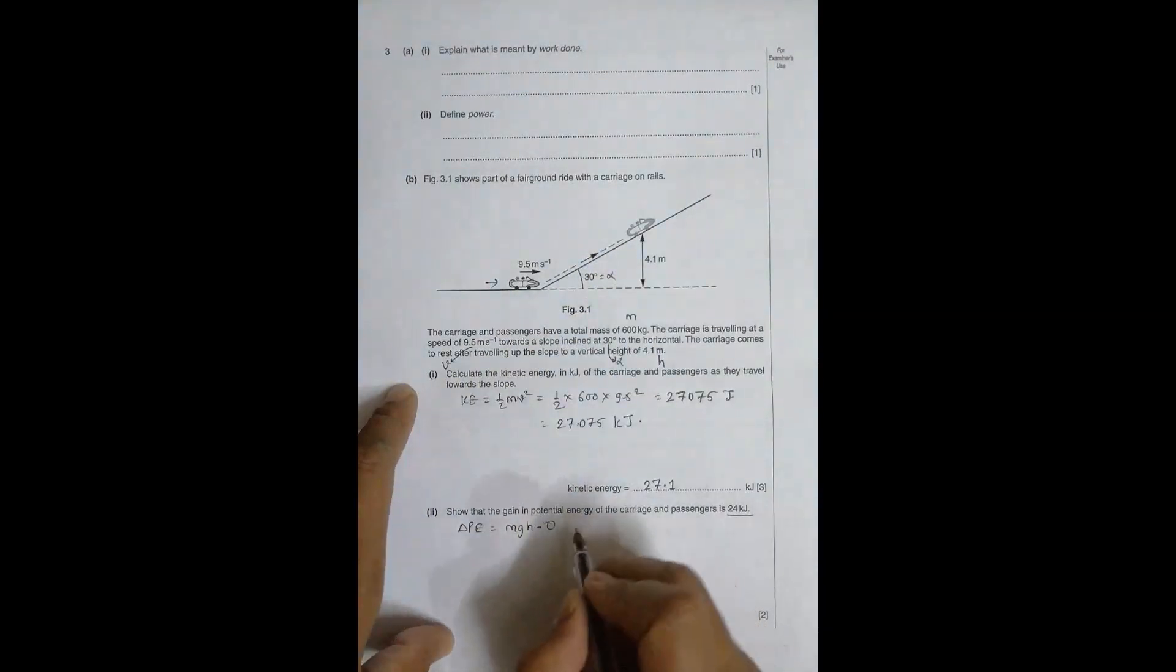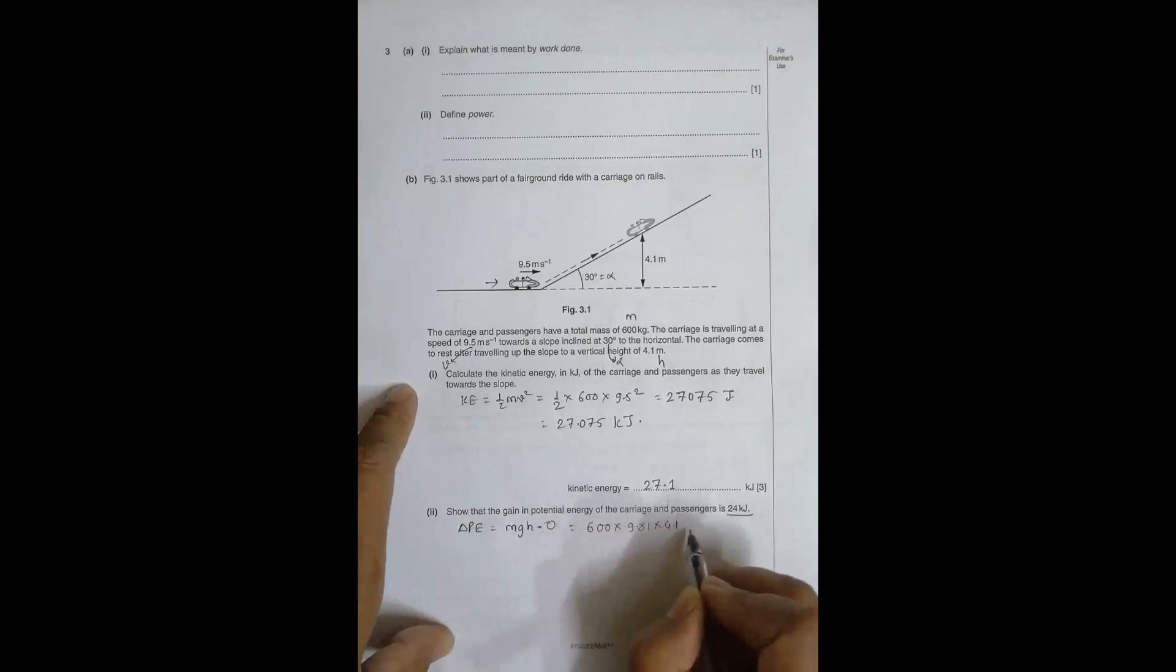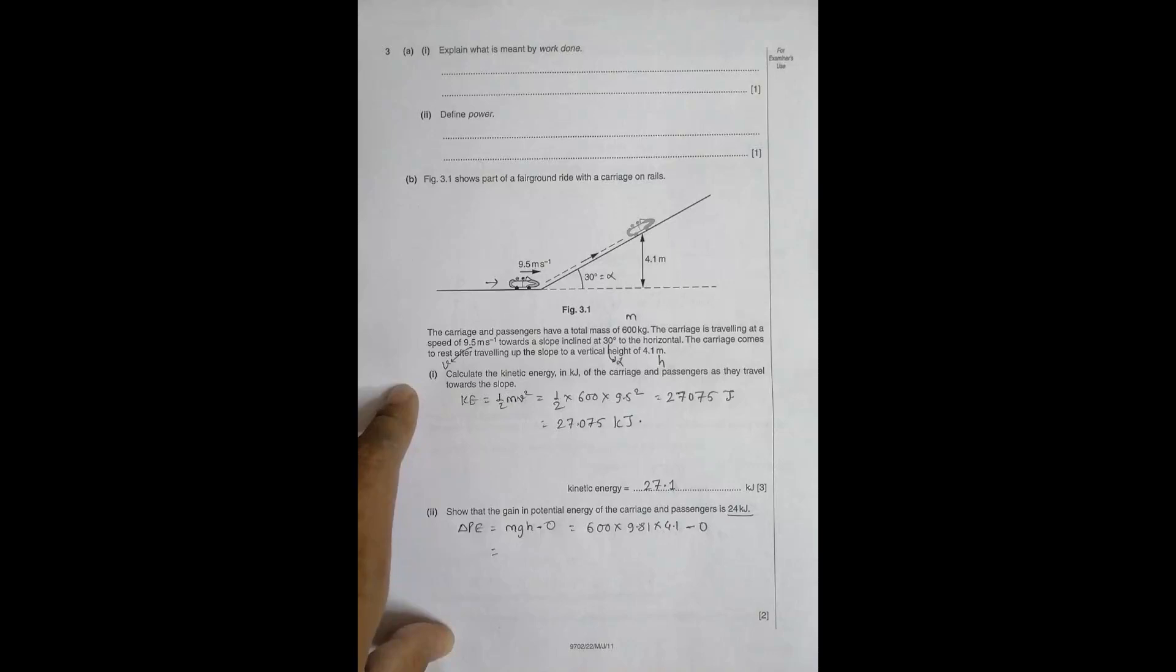This becomes equal to 600 × 9.81 × 4.1, which equals 24,132 joules. So I can write it as 24.132 kilojoules, which is nearly equal to 24 kilojoules.